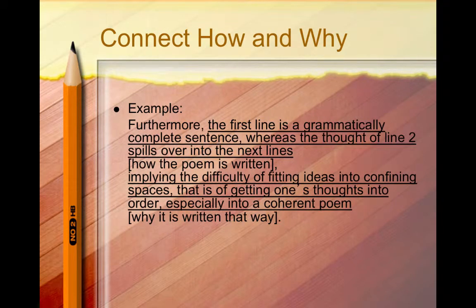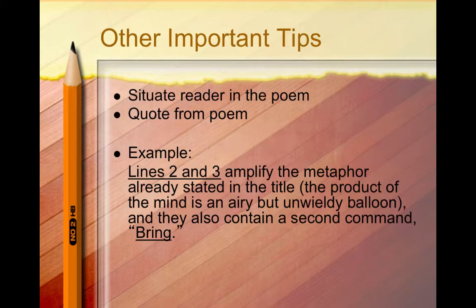To repeat, the writer first points out how the poem is written and then explains why it's written that way. As you write about the poem, help the reader of your paper recall which parts of the poem you're writing about, such as the opening line or the second stanza. Also, quote from the poem so readers can see the words or phrases or poetic devices you're writing about. For example, lines 2 and 3 amplify the metaphor already stated in the title. The product of the mind is an airy but unwieldy bloom. And they also contain a second command: bring.